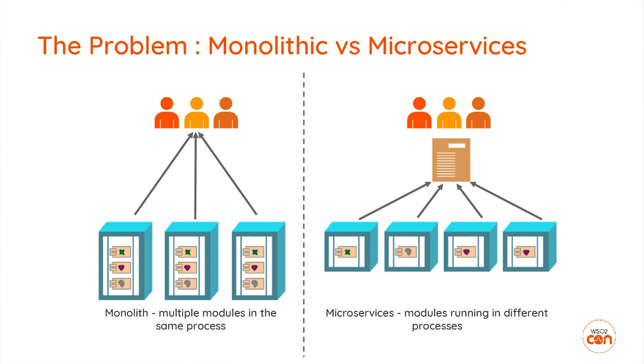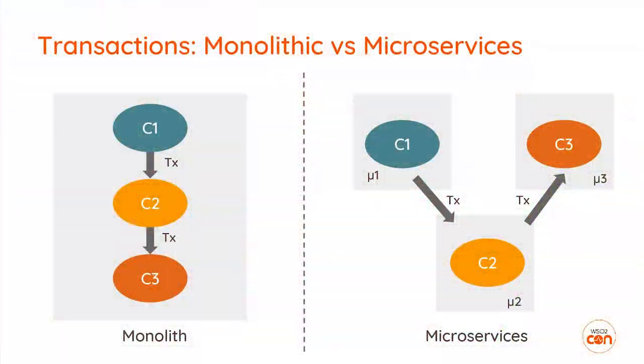Now let's get to the actual problem we are trying to address. We have different application architectures: monolithic applications and microservices applications. In a monolith, multiple business components are within the same application running on the same process. In microservices, each component is separated and running in a different environment.